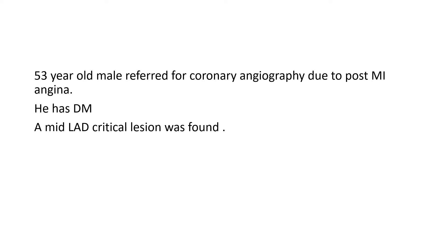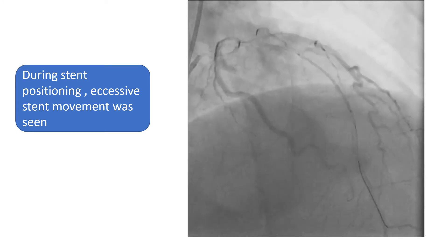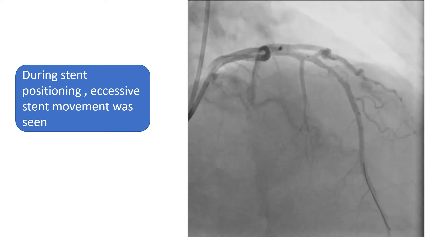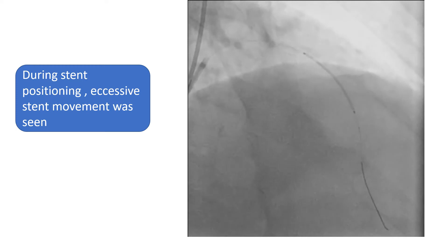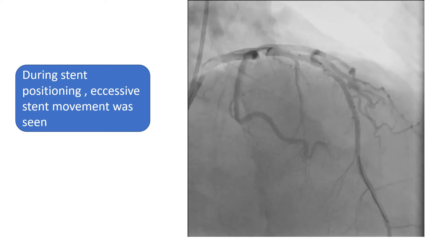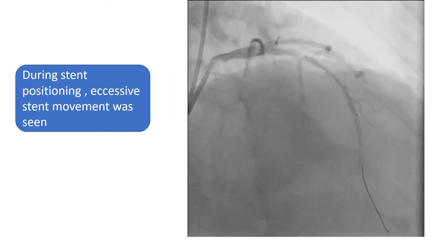The first case is a 53-year-old male referred for coronary angio due to post-MI angina. He is diabetic, not hypertensive and non-smoker. During angiography, a middle LAD critical lesion was found. This is a cranial view of the left coronary system. It shows a long stent to be deployed in the middle LAD. We can see the stent is moving about 8 to 10 mm with each cardiac contraction. This movement would prevent accurate placement of the stent.